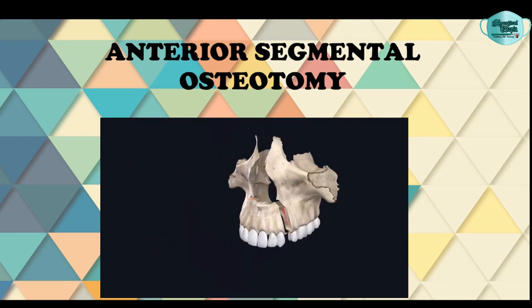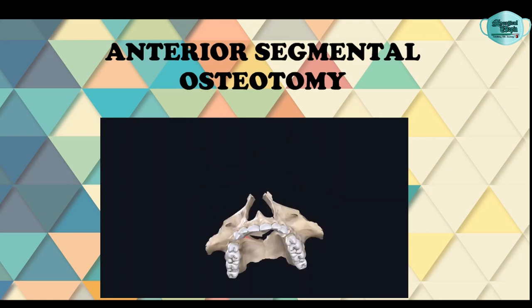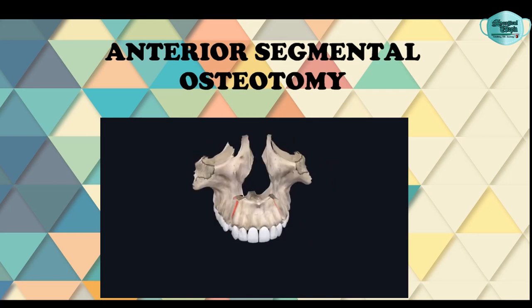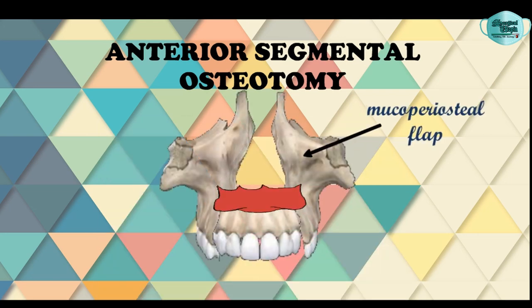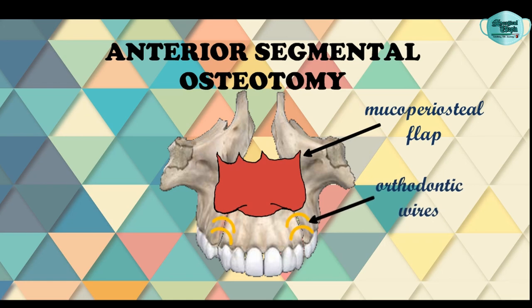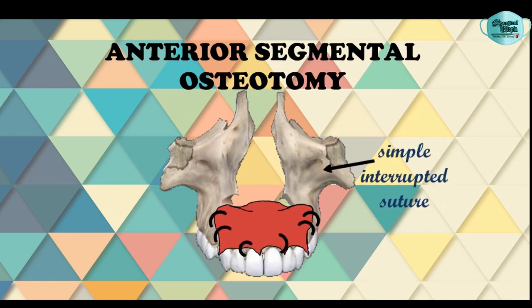In cases where superior repositioning of the maxillary segment is needed, the length of the nasal septum is reduced using a rongeur. After the segment is freed and completely mobilized, it can be repositioned in the desired position and fixed using orthodontic wires or with the help of an arch bar. The mucoperiosteal flap is then closed with simple interrupted sutures.